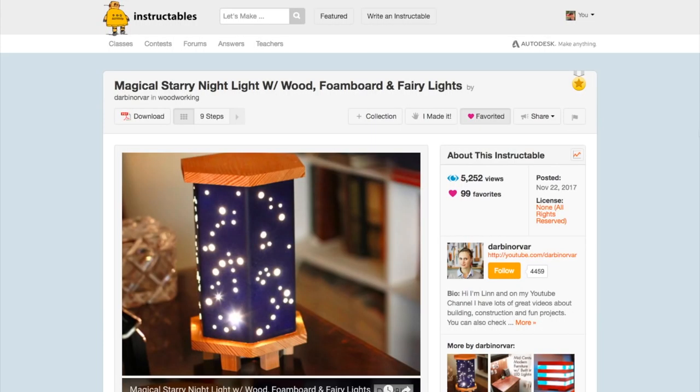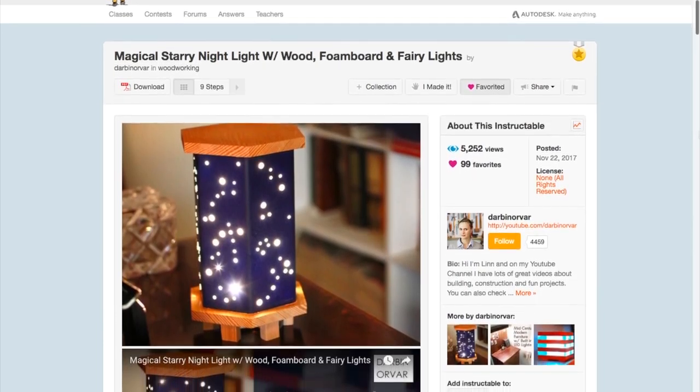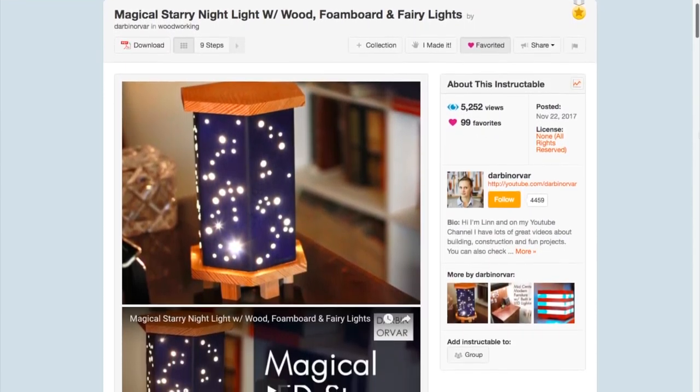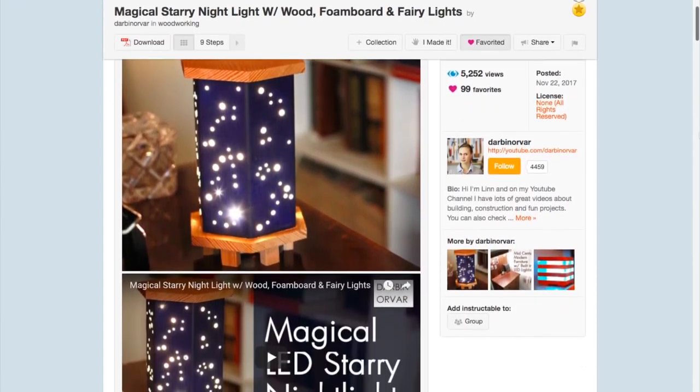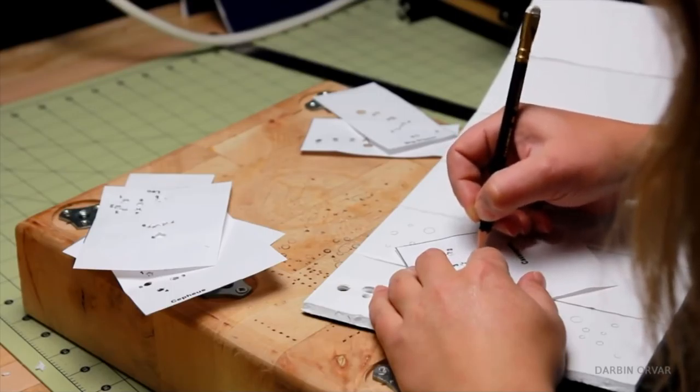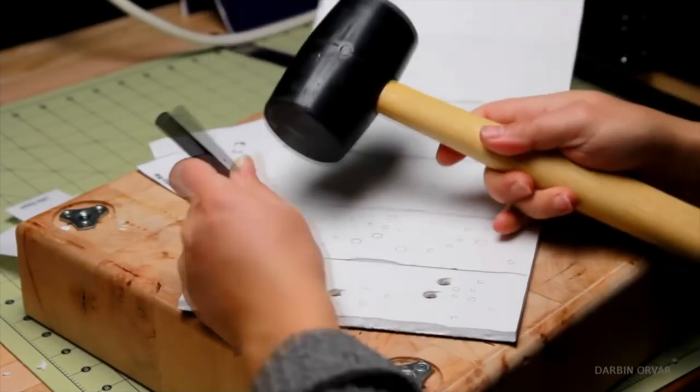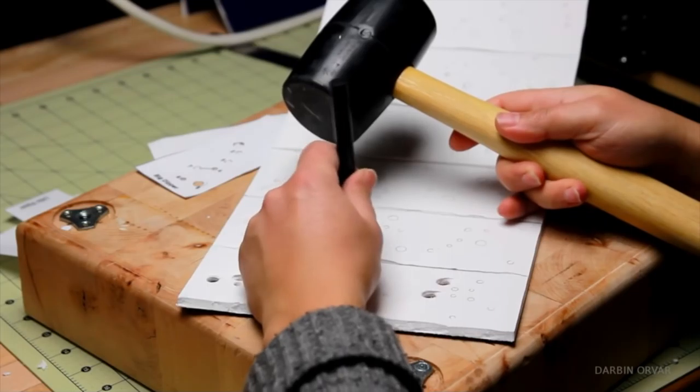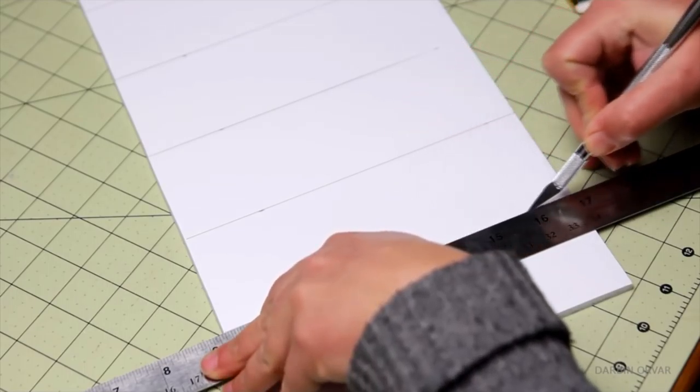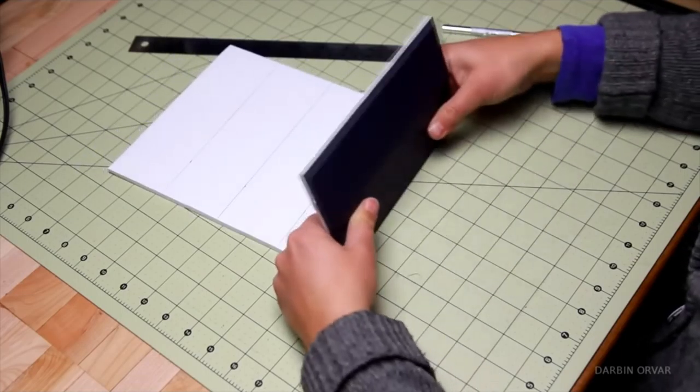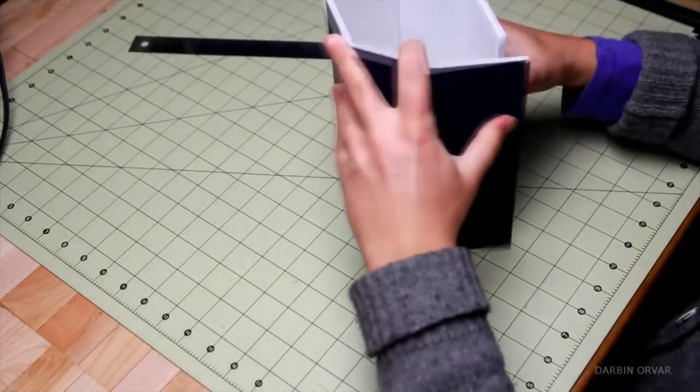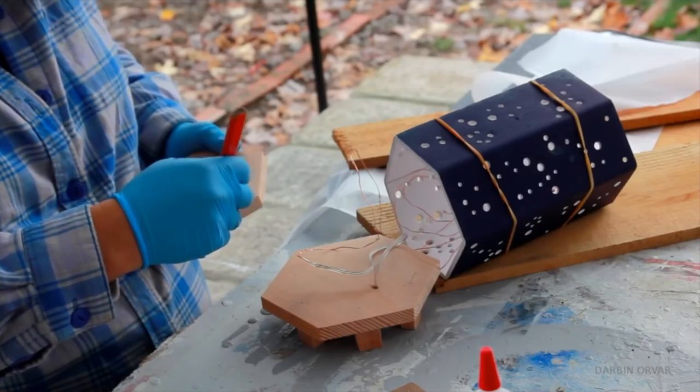For something even more on the crafty side, Lynn from Darbin Orvar has this starry night lamp made from foam core, wood, and fairy lights. The project involves cutting constellations into foam core using leather punches of different sizes, scoring the foam core into six equal panels, shaping it into a hexagon tube, gluing it up, and making a top and base using wood.